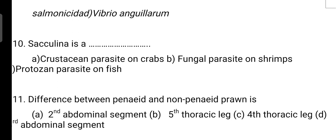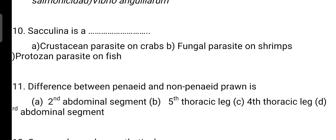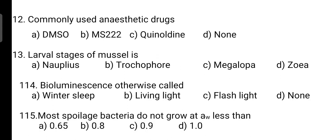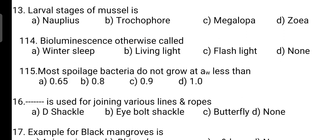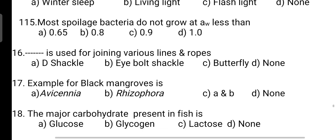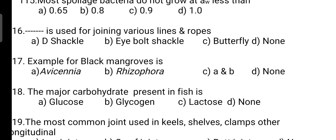Furunculosis is caused by: correct answer is Option B — Aeromonas salmonicida. Sacculina is a crustacean parasite on crab — Option A is correct. Difference between pennaeid and non-pennaeid prawn: correct answer is the second abdominal segment. Commonly used anesthetic drugs: correct answer is Option B — it is MS-222. Larval stage of mussel: correct answer is Option B — it is trocophore. Bioluminescence is otherwise called living light — Option B is correct.